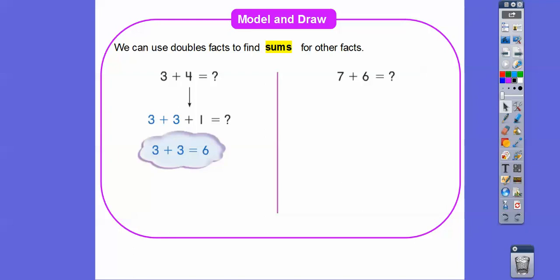Because three plus one is this four right here, and so now we know what three plus three is. Three plus three is six, so we have six plus one, which is seven. So three plus four is going to be equal to seven.